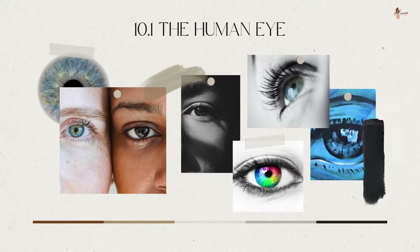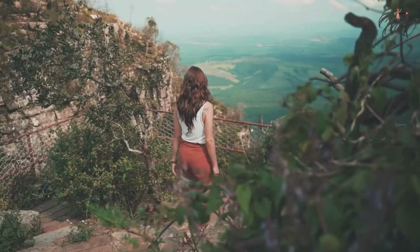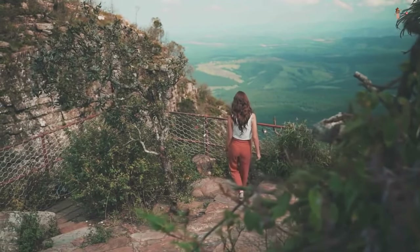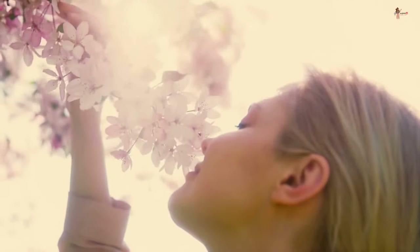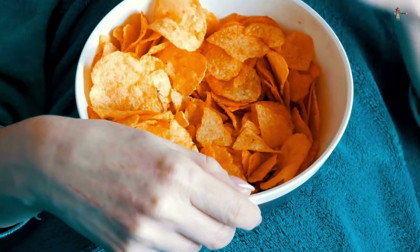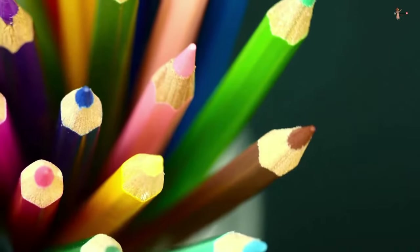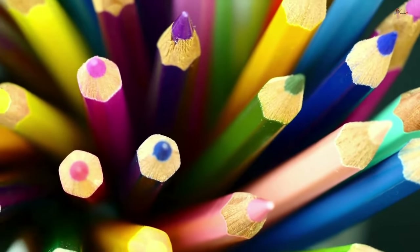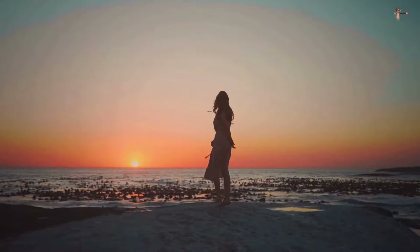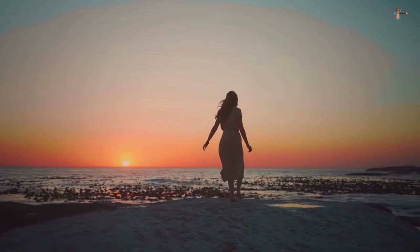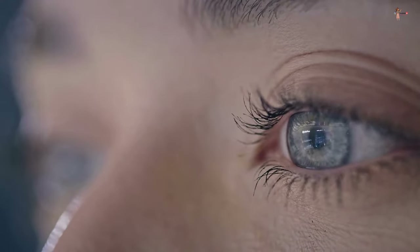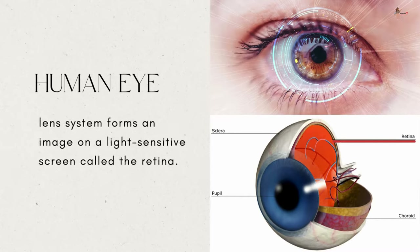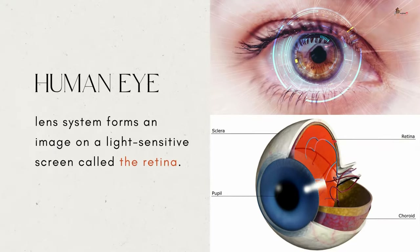The human eye is one of the most valuable and sensitive sense organs. It enables us to see the wonderful world and the colors around us. On closing the eyes, we can identify objects to some extent by their smell, taste, sound, or touch. However, it is impossible to identify colors with closed eyes. Thus, the human eye is the most significant sense organ. The human eye is like a camera — its lens system forms an image on a light-sensitive screen called the retina.